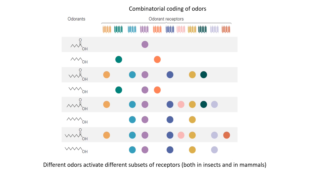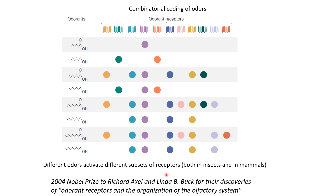In vertebrates there is also combinatorial coding at the level of receptors — each odorant activates a subset of the receptors, and each receptor is activated by a subset of odors. By knowing exactly which subset of receptors is activated, the brain can figure out what odor must have been present. The olfactory receptors of vertebrates were discovered by two scientists, Richard Axel and Linda Buck, who received a Nobel Prize in 2004 for their discovery of the odorant receptors and for figuring out this combinatorial coding.